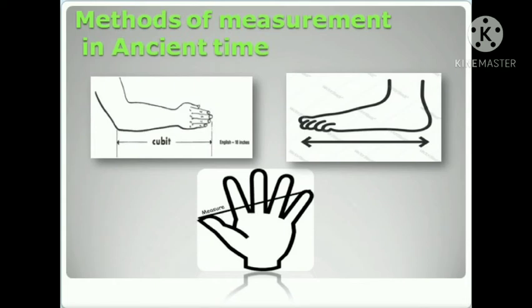Methods of measurement in ancient time: In earlier times, human beings used cubit, foot, and hand span as units of measurement of length. However, these length measurement methods are not reliable because they could be different for different people. So there is a need for a universal measurement system that is universally accepted.